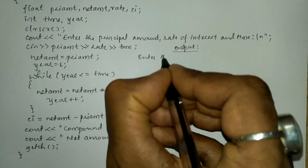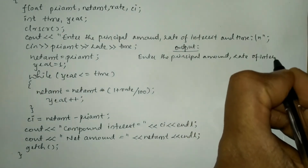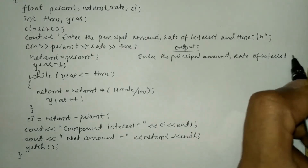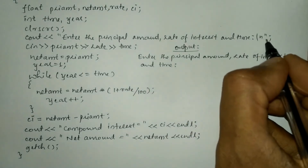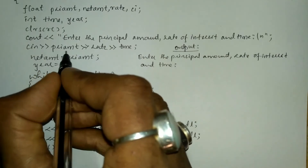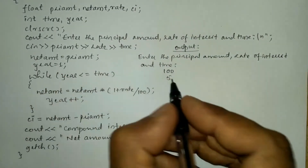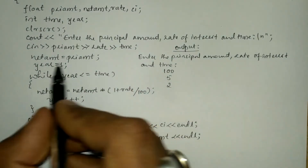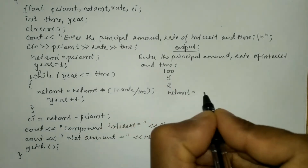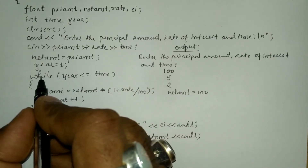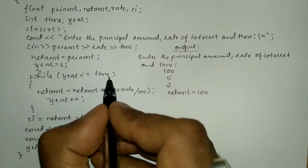The program will print 'Enter the principal amount, rate of interest, and time' on a single line, followed by a newline using '\n' or endl. Whatever number you enter will be stored in the pri_amt variable. For example: principal amount = 100, rate = 5, and time = 2 years. Principal amount 100 is assigned to net_amount, so net_amount = 100. Year is set to 1, and we check: 1 <= 2, so the condition is true.